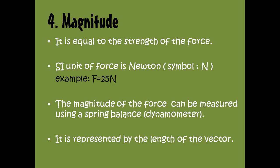The fourth characteristic is the magnitude. The magnitude is equal to the strength of the force — as we increase the force and push more, the magnitude of the force increases. The SI unit of the force is Newton, and its symbol is capital N. We say that F equals 25 Newtons. The magnitude of the force can be measured using a spring balance, also called a dynamometer. The magnitude is represented by the length of the vector, so as the magnitude of the force increases, so will the length of the vector.